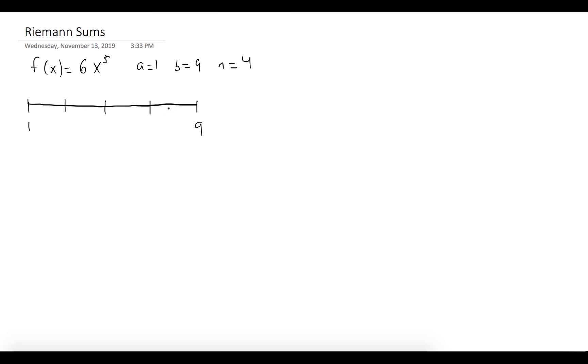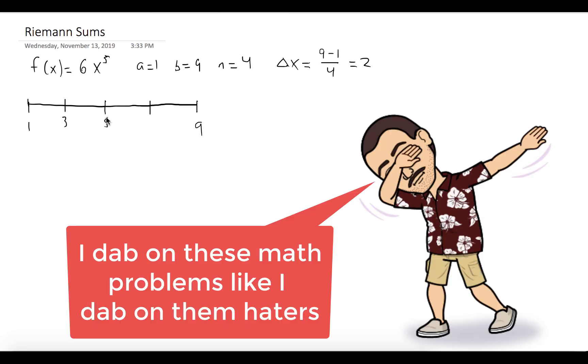We'll break it up into our four regions. Delta x is equal to (9 - 1) over the number of regions, which is 2. So we have 3, 5, and 7 as the other endpoints. But we're looking for midpoints to be our sample points.